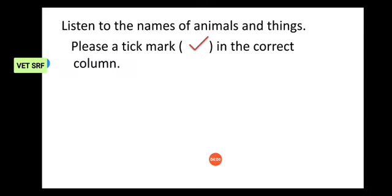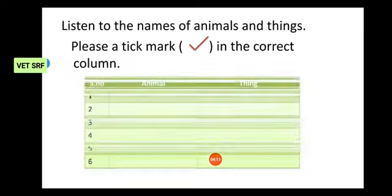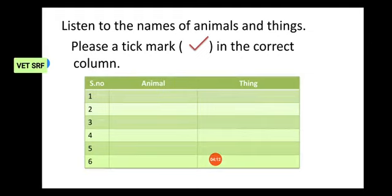Now, Maji is going to tell some animals' names and things. You have to mention this tick mark in the correct column. So you have to take your book and pencil. Now, draw like this columns. And then, listen to my words. Tick the correct thing in which column.